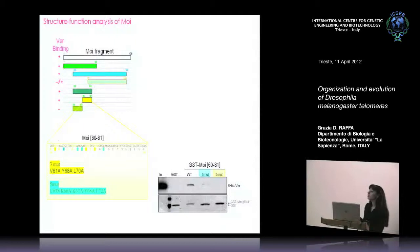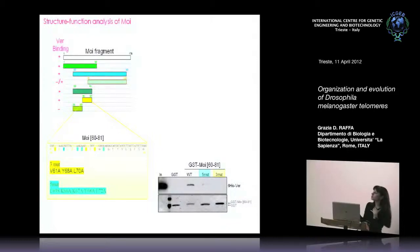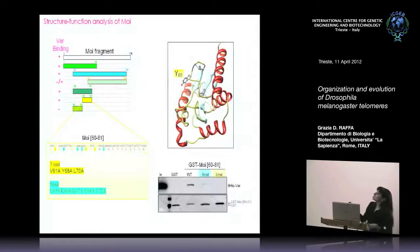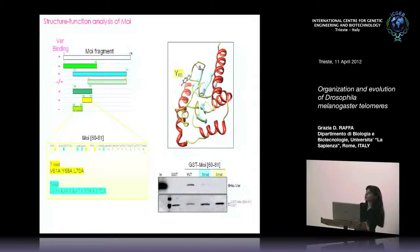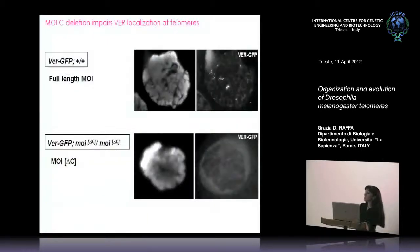We introduced mutations in these residues and generated mutant peptides to compare their ability to bind VER protein. Both mutant peptides completely lost the ability to bind VER. Something interesting is this tyrosine residue. We built a model of Modigliani including features like the DNA binding domain, the VER binding domain, the region responsible for interaction with HipHop, and the region responsible for self-interaction. This tyrosine is particularly exposed, making it a good candidate for recognition of VER. In vivo, when you express a deletion of Modigliani lacking the VER interaction domain, as expected, it completely removes Verrocchio from telomeres.